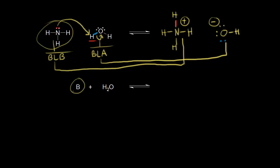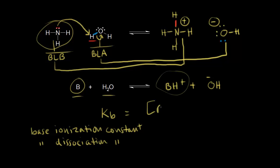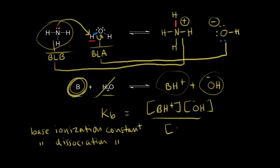Instead of using ammonia, let's use a generic base B. Some generic base B reacts with water, takes a proton from water to form BH+, and if you take a proton away from H2O you form OH-. Once this comes to equilibrium, we write an equilibrium expression using KB — the base ionization constant, also called the base dissociation constant. KB equals the concentration of BH+ times the concentration of OH-, all over the concentration of the generic base B. Water is left out.